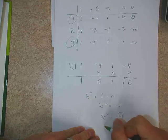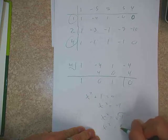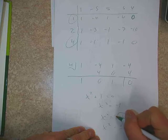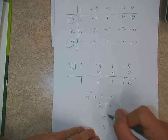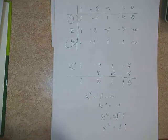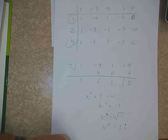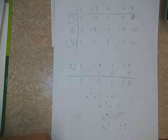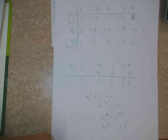If we set that equal to 0, we're going to get x squared equals negative 1. And therefore we're going to get x equals plus and minus the square root of negative 1, which really is x equals plus and minus i.